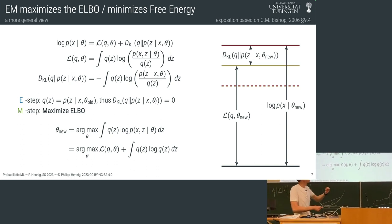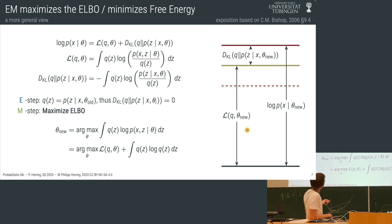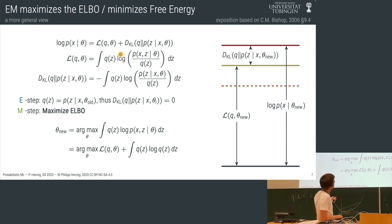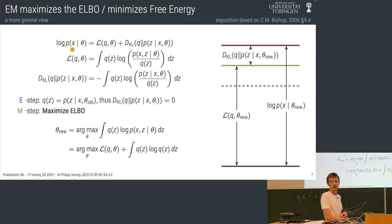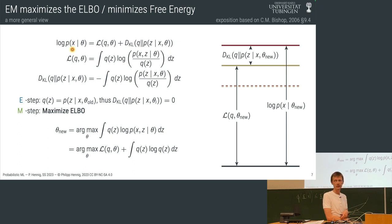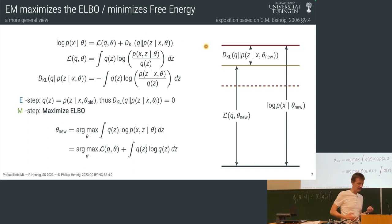Now we can take a step in theta space. When we do that, we change the KL divergence again — by changing theta, this q becomes kind of an outdated old posterior that is not correct anymore. Therefore L is not the exactly correct value for the evidence anymore, because the distribution over z we're integrating over is in some sense outdated, and therefore a non-negative, non-zero KL divergence shows up again.